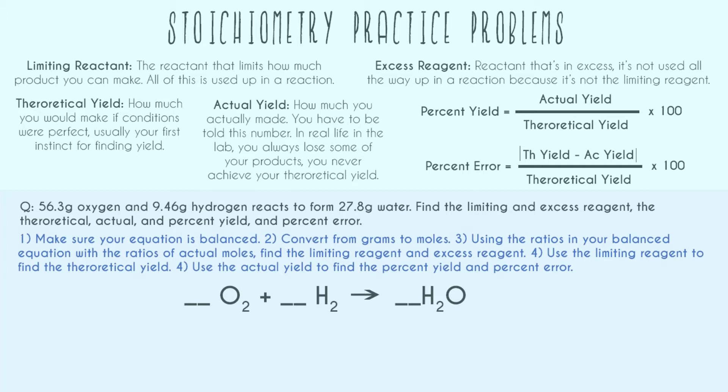For right now, let's start here with our question, which reads: 56.3 grams oxygen and 9.46 grams hydrogen reacts to form 27.8 grams water. Find the limiting and excess reagent, the theoretical, actual, and percent yield, and percent error.